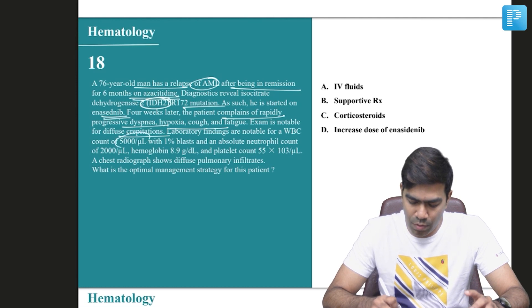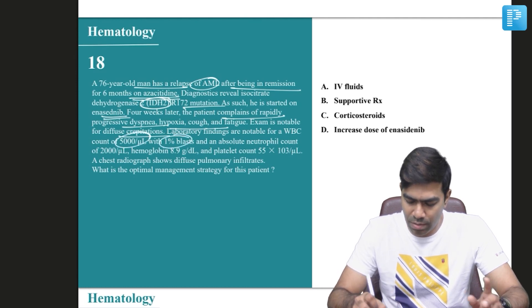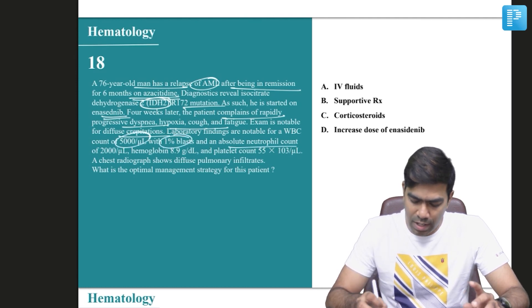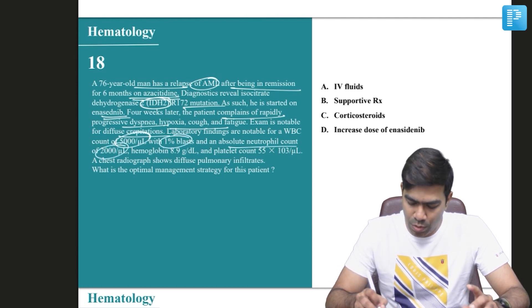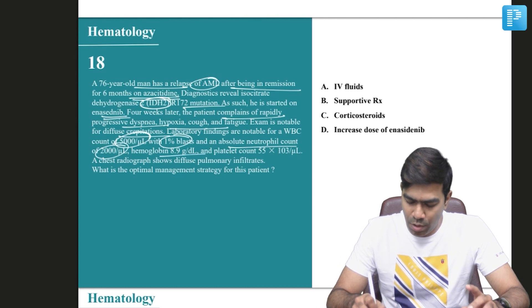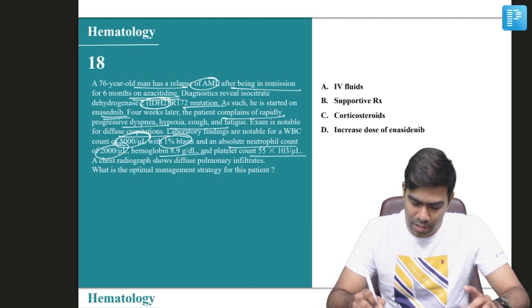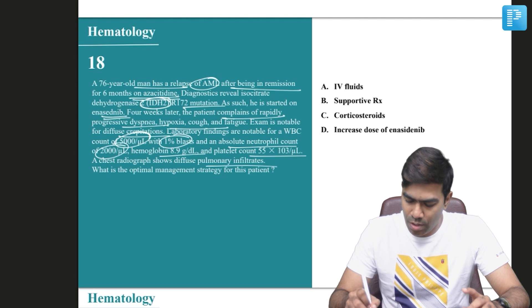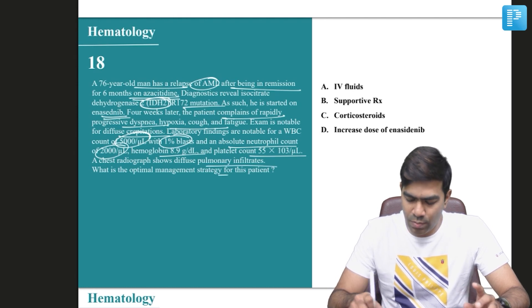Laboratory findings are notable for a WBC of 5,000, just 1% blasts, and an ANC of 2,000. Hemoglobin is 8.9 and platelet count is 55. Chest X-ray shows diffuse pulmonary infiltrates.